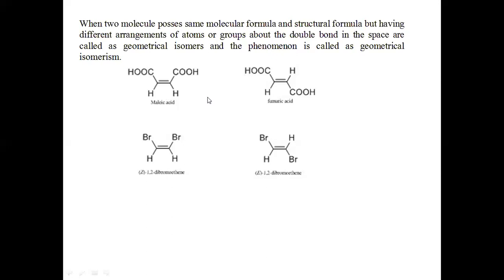So we can say there is a different arrangement of the COOH group. That is why maleic acid and fumaric acid have the same molecular formula and the same structural formula, but they have a different arrangement of the COOH group. That is why they are called geometrical isomers of each other and the phenomenon is called geometrical isomerism.